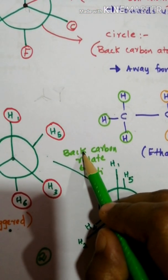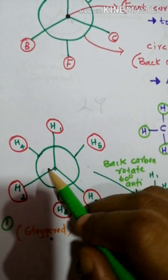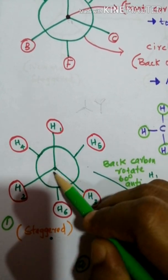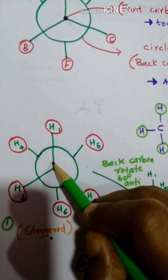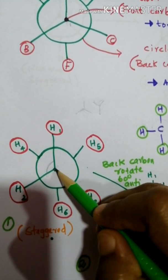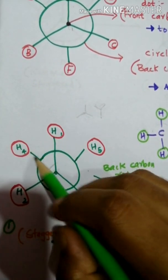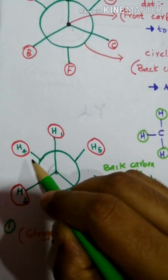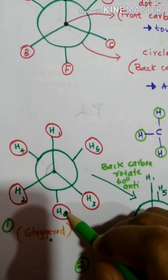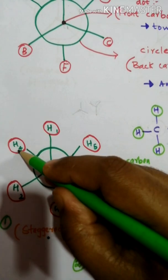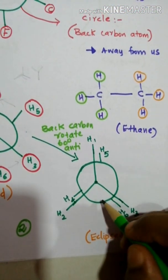We can rotate the back carbon 60 degrees in the anti-clockwise direction. There is no change in the front carbon — only the back carbon rotates. A full rotation is 120 degrees, so half of that is 60 degrees. You can rotate H4 about 60 degrees, and similarly rotate H6 by 60 degrees.